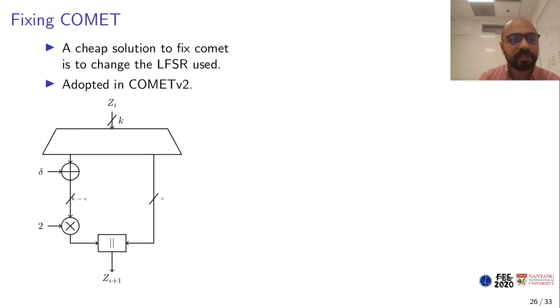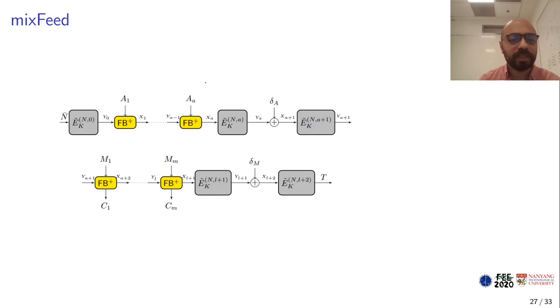How to fix COMET? A cheap fix is to change the size of the finite field, so instead of having k over 2, it can be k minus c where c is small. Actually, a similar fix was adopted in COMET version 2 recently, as I described earlier.